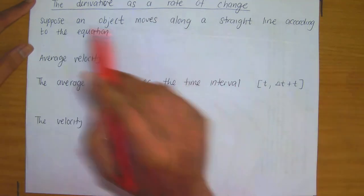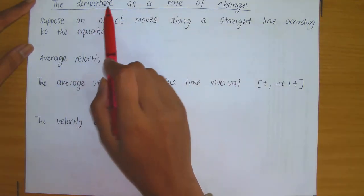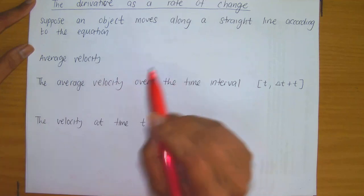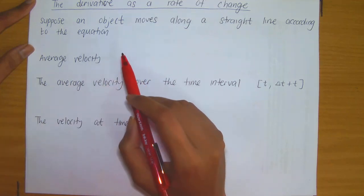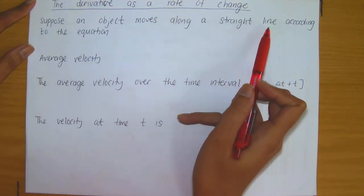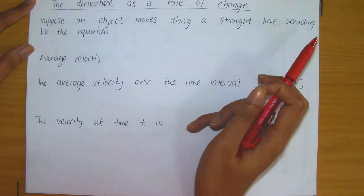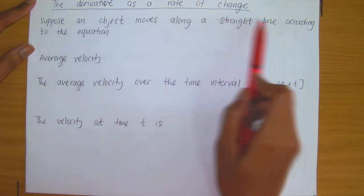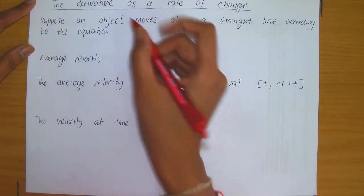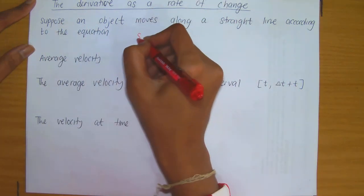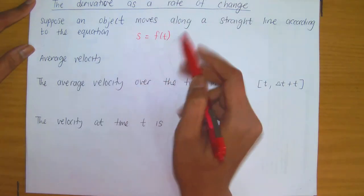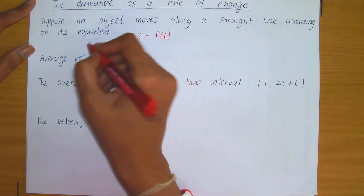In this video lecture, we're going to be focusing on interpreting the derivative as a rate of change. One of the important applications of the derivative, which involves the motion of an object traveling along a straight line, is what we will use to interpret the derivative as a rate of change. Suppose an object moves along a straight line according to the equation S equals f of t, where this equation is the position function of the object.